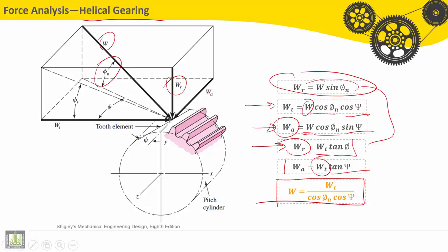Then, the resultant force, here we can find out the final form of the resultant force, it is equal to tangent force Wt divided by cosine phi n, cosine phi n.